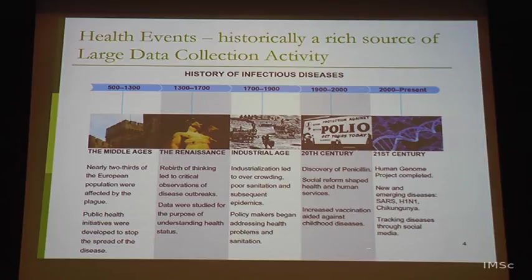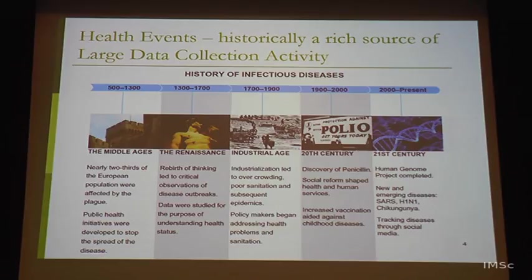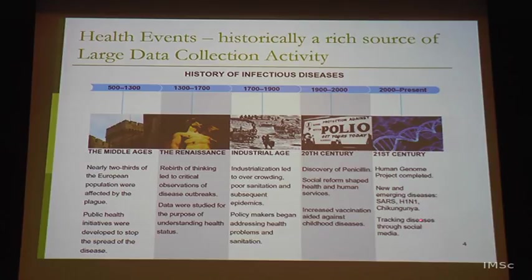In the industrial age, industrialization led to overcrowding, urban management, and sanitation issues, followed by epidemics. Policy makers had to meet together to address health problems. Around this time the germ theory was first postulated and people started getting an understanding of how diseases occur and spread. Then in the 20th century, discovery of penicillin and vaccination against childhood diseases caused longevity to shoot up to close to where we are now.